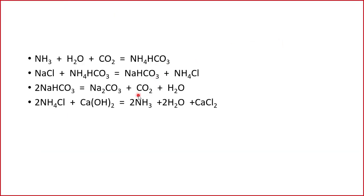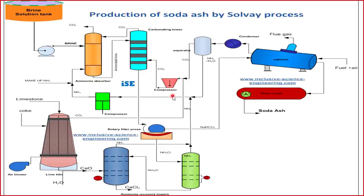The CO₂ and water vapors produced in the calciner are passed through a condenser whose job is to liquefy only water. The stream leaving the condenser has two phases: CO₂ in gaseous form and water in liquid form. This mixture goes into a separator. Water, being in liquid state with higher density, moves to the bottom of the separator, while CO₂ gas, being lighter, leaves from the top. This CO₂ is mixed with CO₂ coming from another section of the plant, compressed, and sent into the carbonating tower.